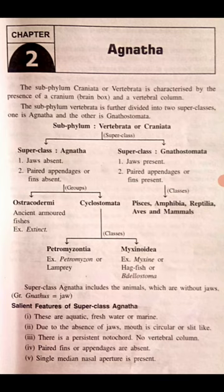These are the salient features of the super class Agnatha. They are aquatic — both fresh water and marine. There is a persistent notochord, but no vertebral column, meaning the notochord is persistent while the vertebral column is absent.